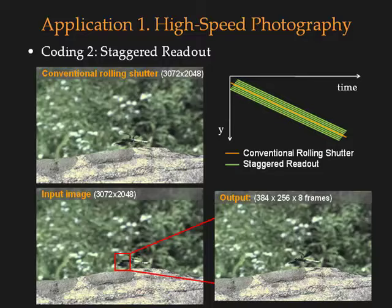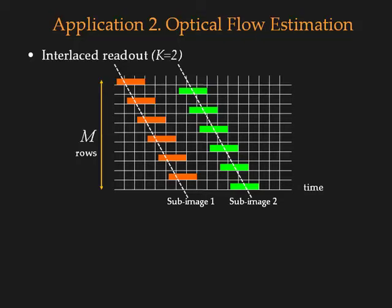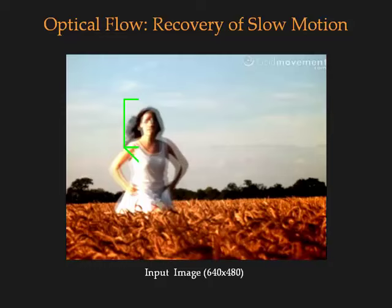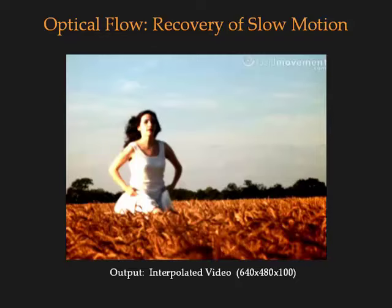In addition to high-speed photography, coded readout can also be used to estimate optical flow from the sub-images. The estimated optical flow can be used either to recover slow motion with interpolation, or to generate a skew-free image, or to remove motion blur due to camera shake. Here is an example for the recovery of slow motion. This is the input image. This is the estimated optical flow. Here is the output video showing the slow motion of running.